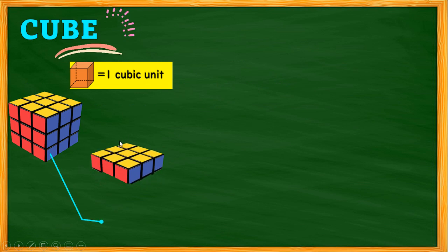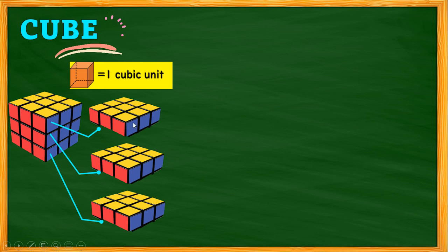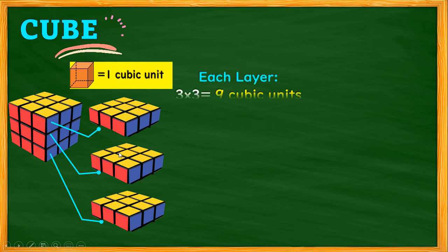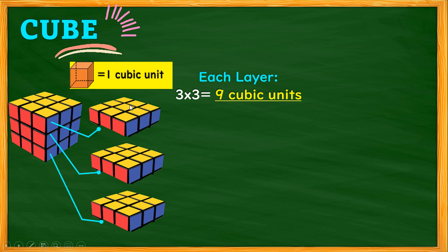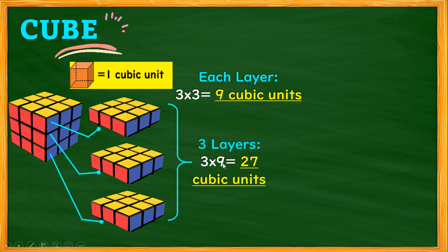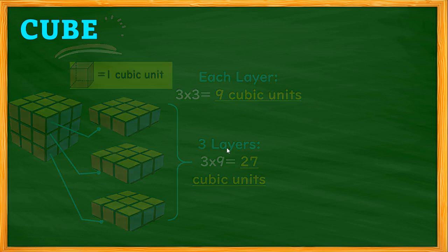The cube contains three layers. The first layer contains a 3 by 3 arrangement, which is 9 cubic units. Adding all layers together: 3 layers multiplied by 9 gives 27 cubic units. That is the visual representation of finding the volume of a cube.